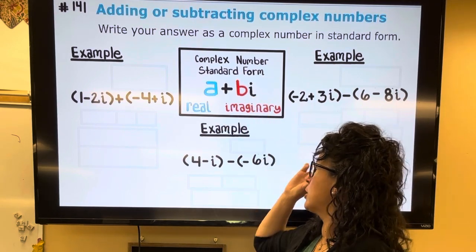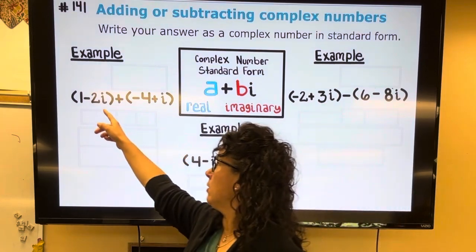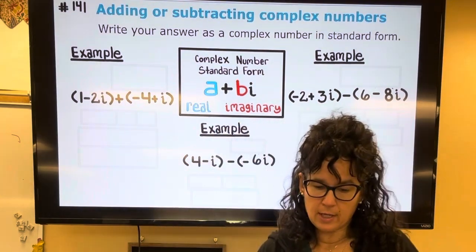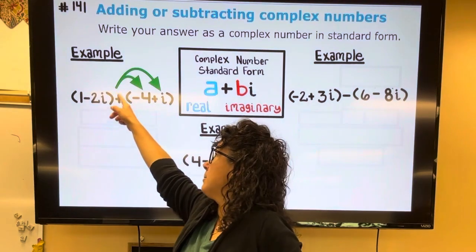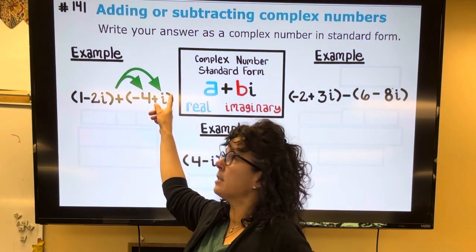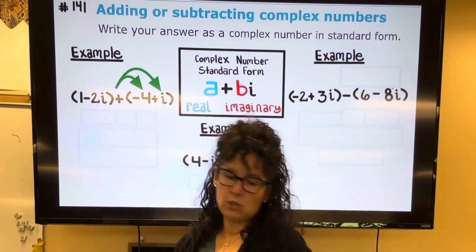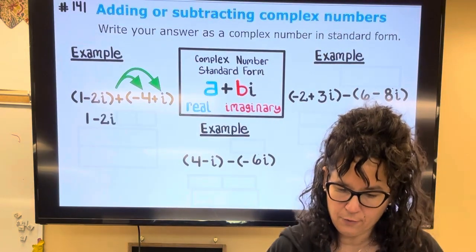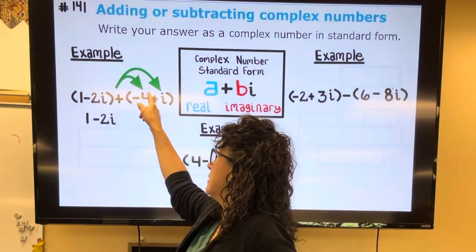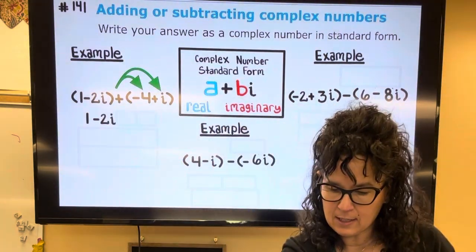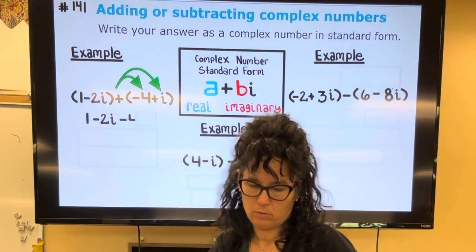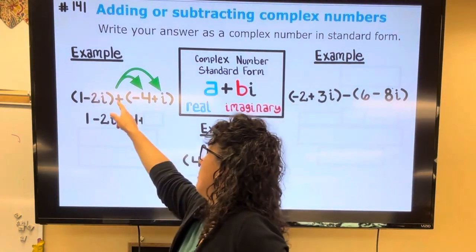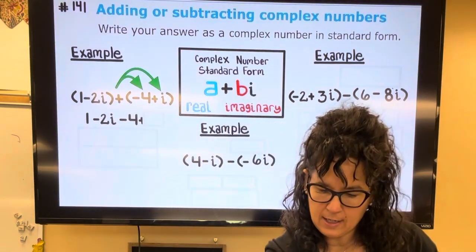Okay, so here we go. I'm going to add those two together. Ultimately I am distributing a positive through this. So 1 - 2i we've got there in the front, and then a positive times a negative is a negative, so that's minus 4. And then when I take a positive times a positive i, I have plus i.